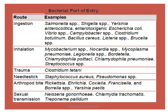Sexual transmission includes Neisseria gonorrhoeae, Chlamydia trachomatis — the number one STD in this country — and Treponema pallidum causing syphilis, which we will discuss in the next set of lectures. The major routes — ingestion, inhalation, sexual transmission — are where bacteria pass through mucous membranes. Trauma involves both skin and mucous membrane; arthropod bites involve skin. These are the three most important routes.